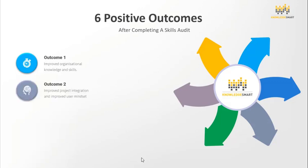Outcome two: improved project integration and an improved user mindset. When we talk about project integration, we're talking about the coordination of all elements of a project — coordinating tasks, resources, stakeholders, and many other project elements. We're also managing conflicts between different aspects of a project, making trade-offs between competing requests, and evaluating our resources.